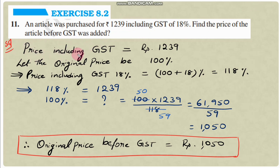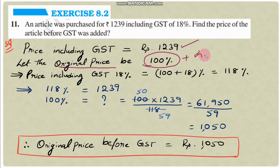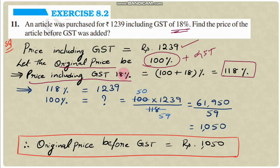Solution: Price including GST is ₹1239. Let the original price of the article be 100%. To this 100% we add 18% GST, so 100% + 18% = 118%. The price including GST is 118%, which equals ₹1239.